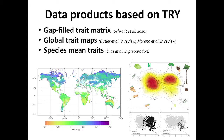One data product is the gap-filled trait matrix, which uses a gap-filling method — we have the gap-filled matrix at hand, though it's not yet available via the website as it's in a developmental stage. Apart from this we are involved in the development of global trait maps, and species mean traits from the Díaz et al. paper in the global spectrum will also become available soon.